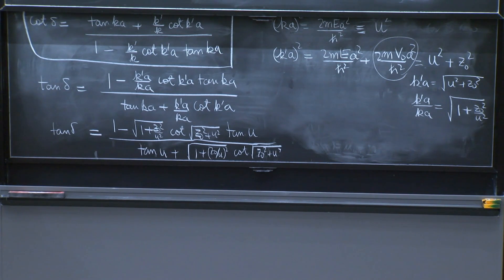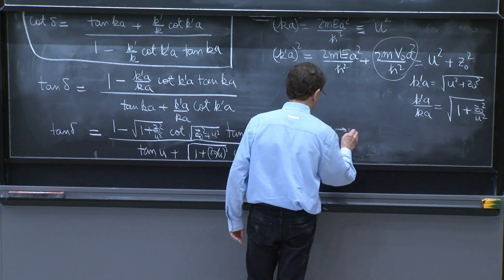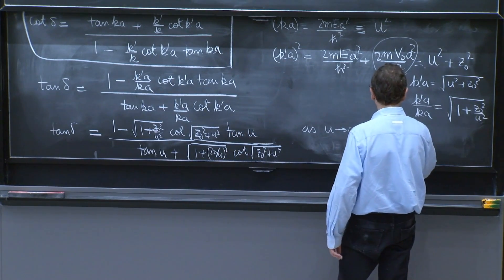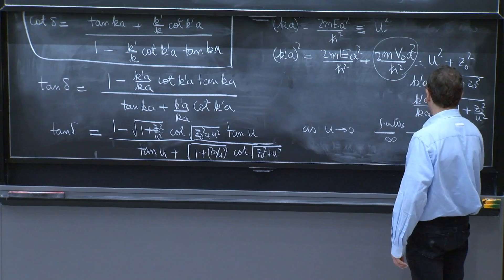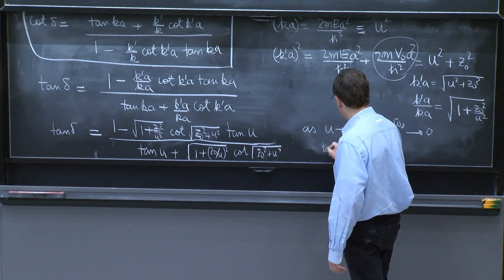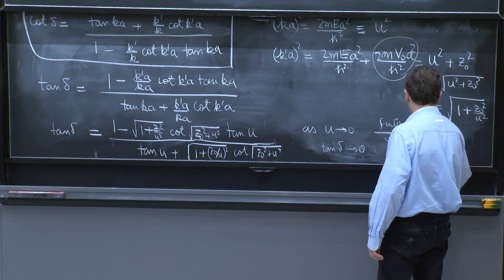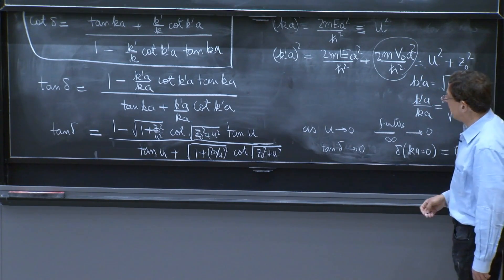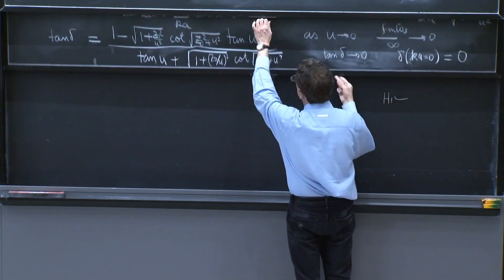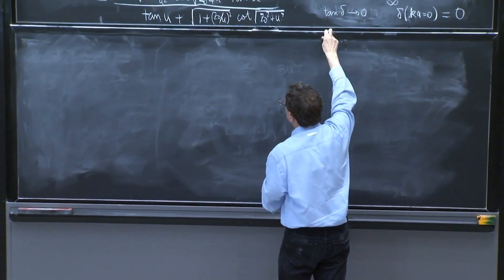So as u goes to 0, tangent of delta goes to 0. So you can choose delta to be 0 for 0 energy. As u goes to 0, you get finite divided by infinity and goes to 0. So tan delta goes to 0. And we can take delta of ka equals 0, which is u, to be 0. The phase shift is 0 for 0 energy.